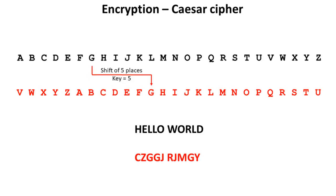We're going to look now at two particular ciphers at two ends of the spectrum. In this video we're going to take a look at the Caesar cipher, and in the next one the Vernam cipher. They exist at opposite ends of the encryption spectrum.